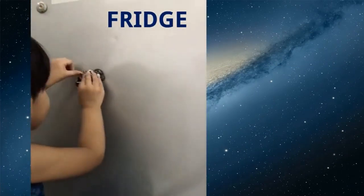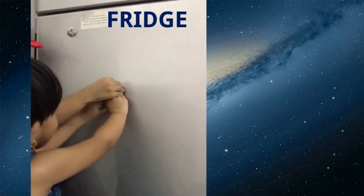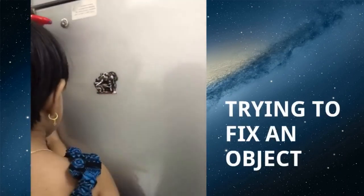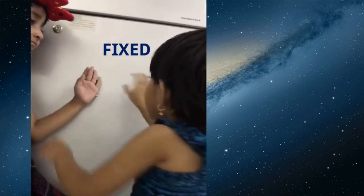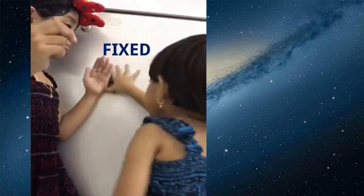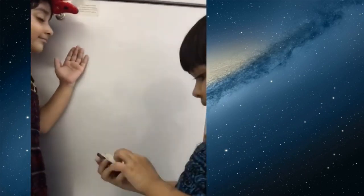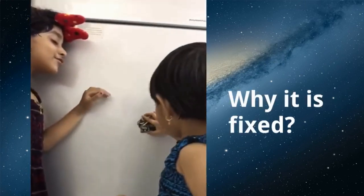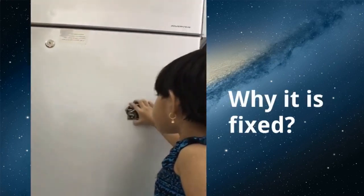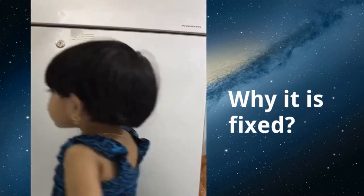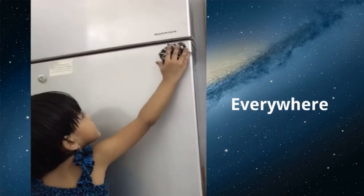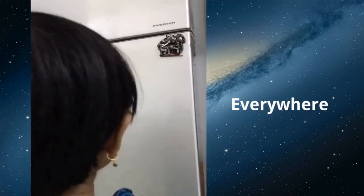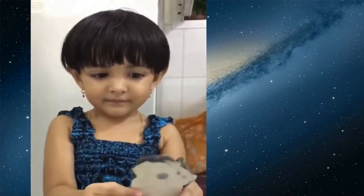Before going to the session we'll try to see an example. Look at this fridge and the children are trying to fix an object and they fixed it. Why is it fixed on the wall of the fridge? See they are trying to fix the object anywhere on the surface. This is the object.